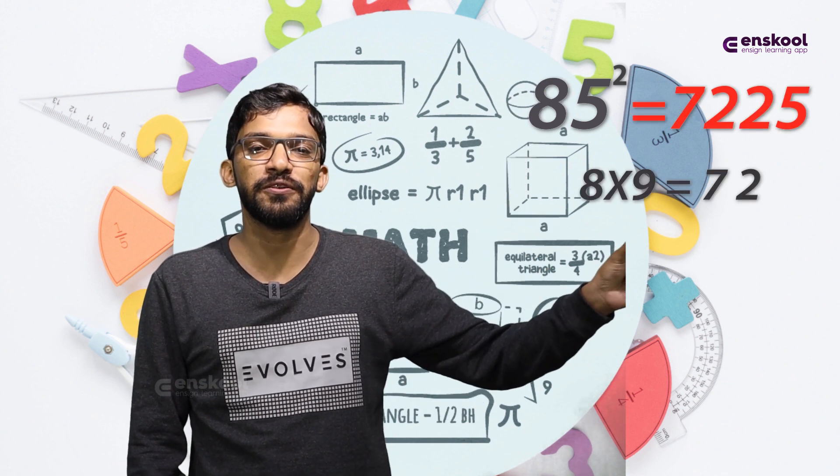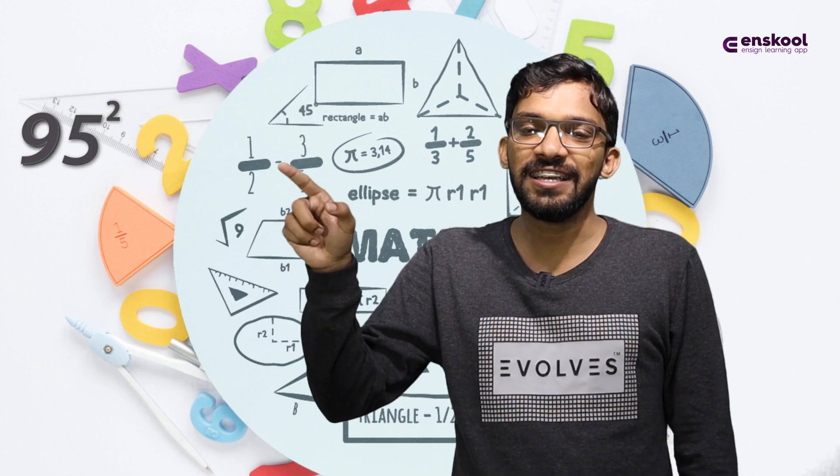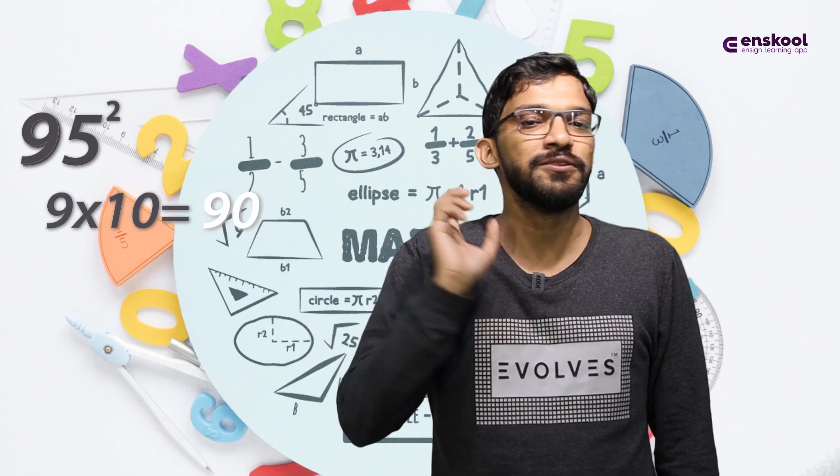95 squared: 9 times 10 is 90, so 9025. This is the pattern for all numbers ending in 5.